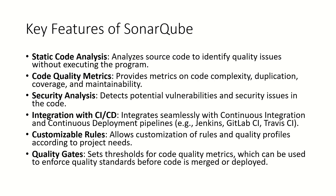The fifth feature is customizable rules — it allows customization of rules and quality profiles according to project needs. The last feature is quality gates. It sets thresholds for code quality metrics, which can be used to enforce quality standards before code is merged or deployed. So you set the quality metrics, and based on those, you can decide to merge or deploy your code.